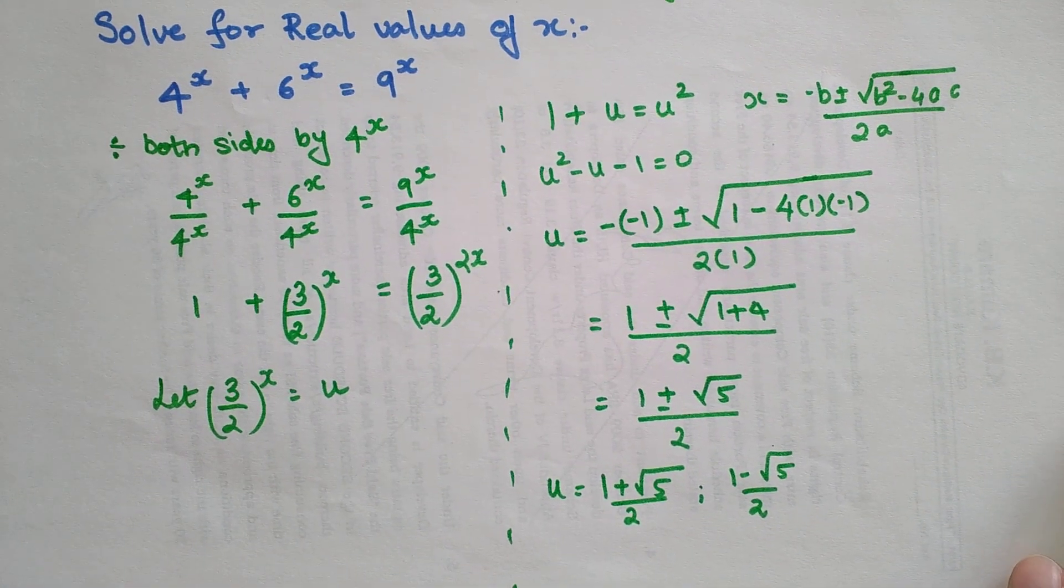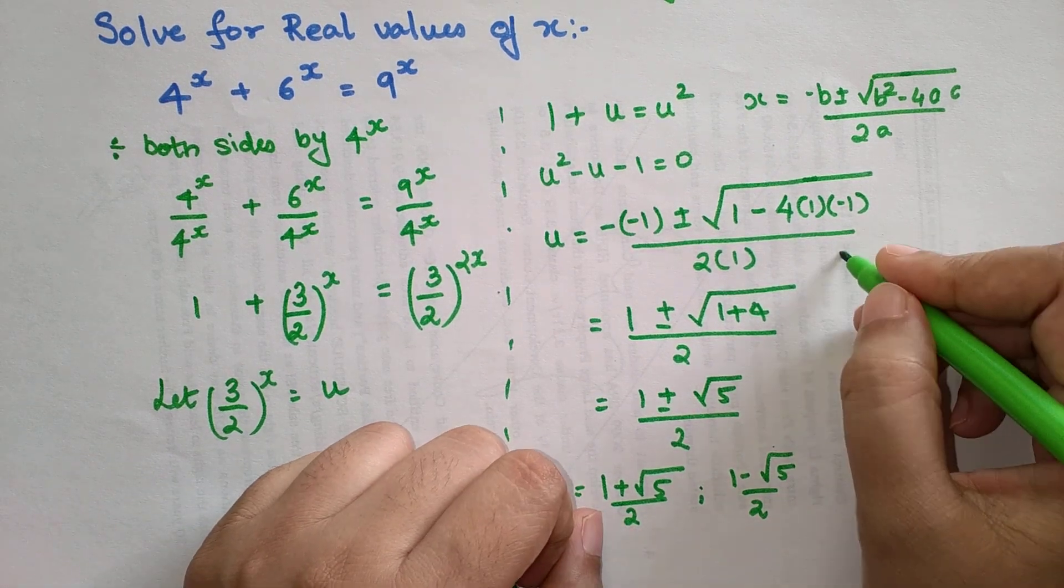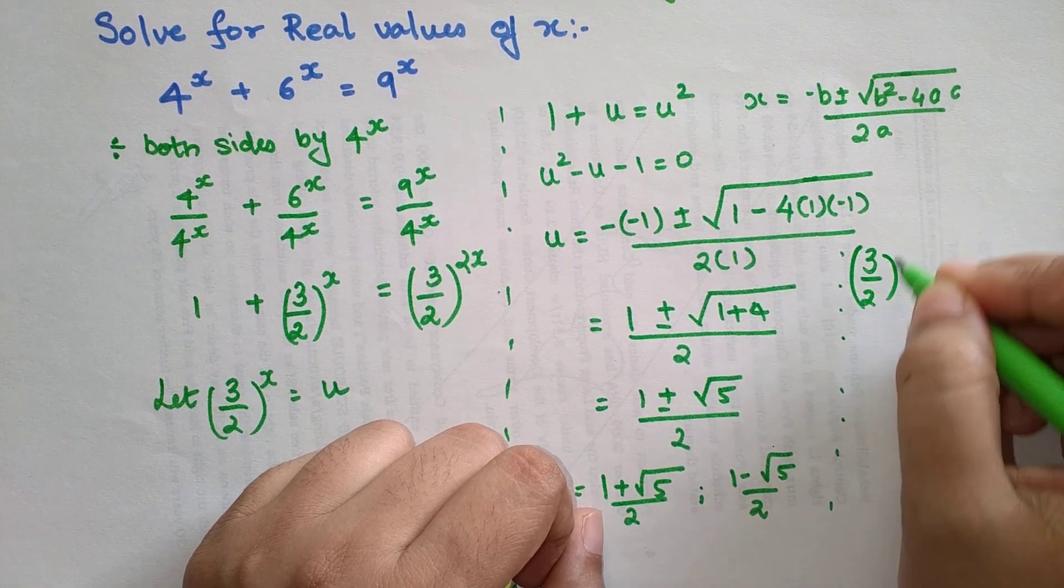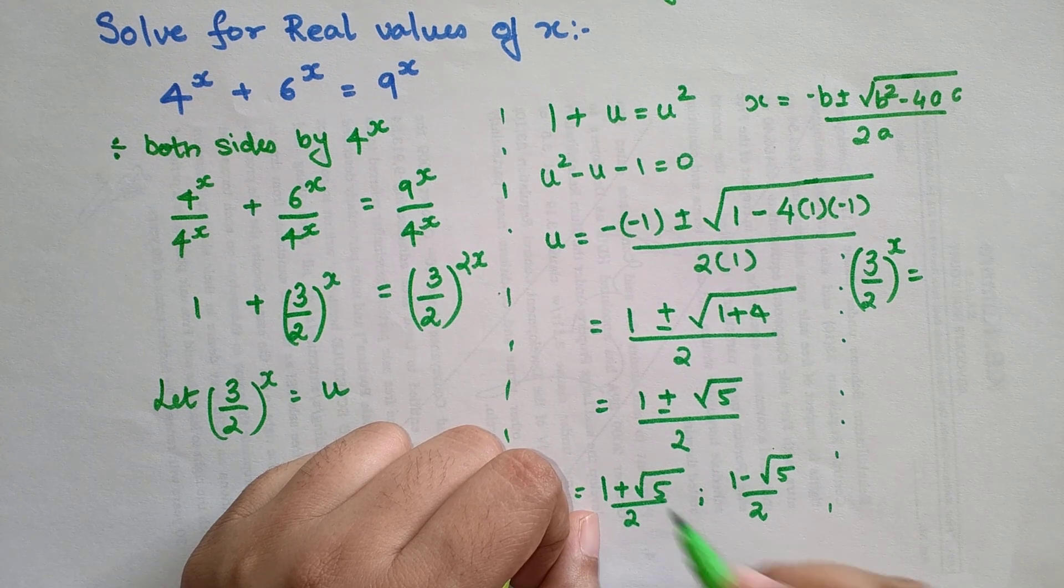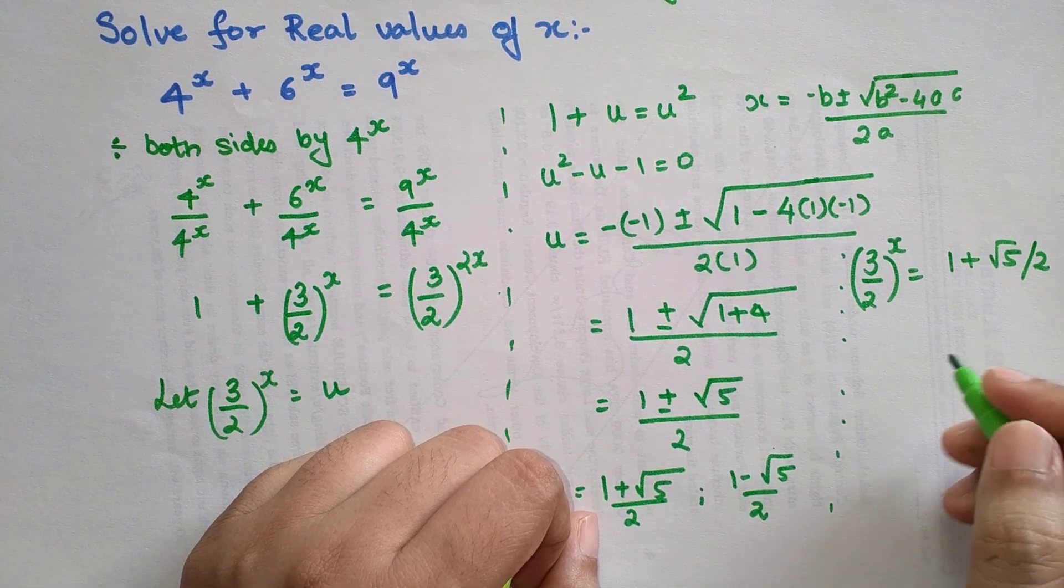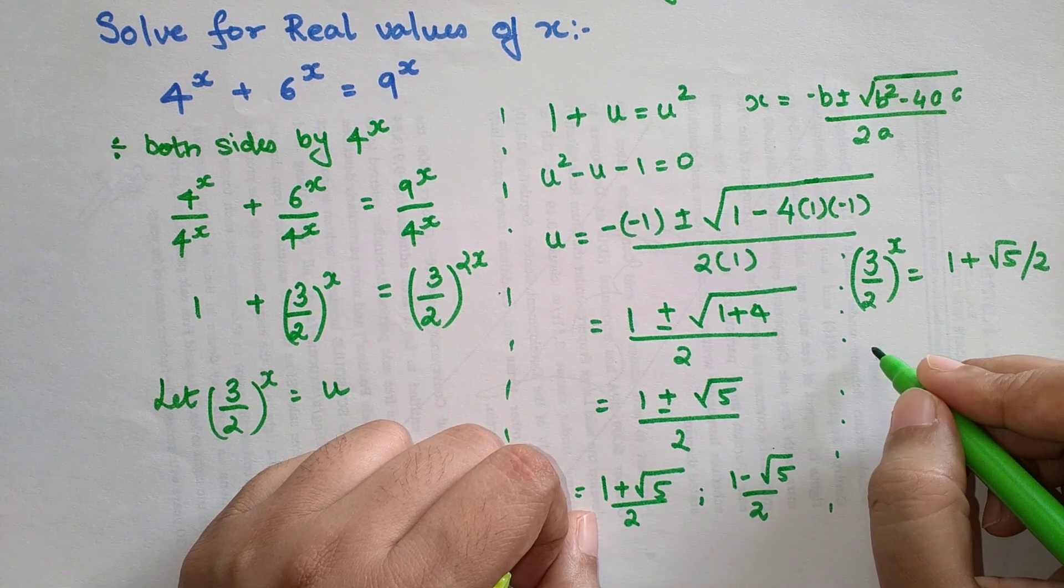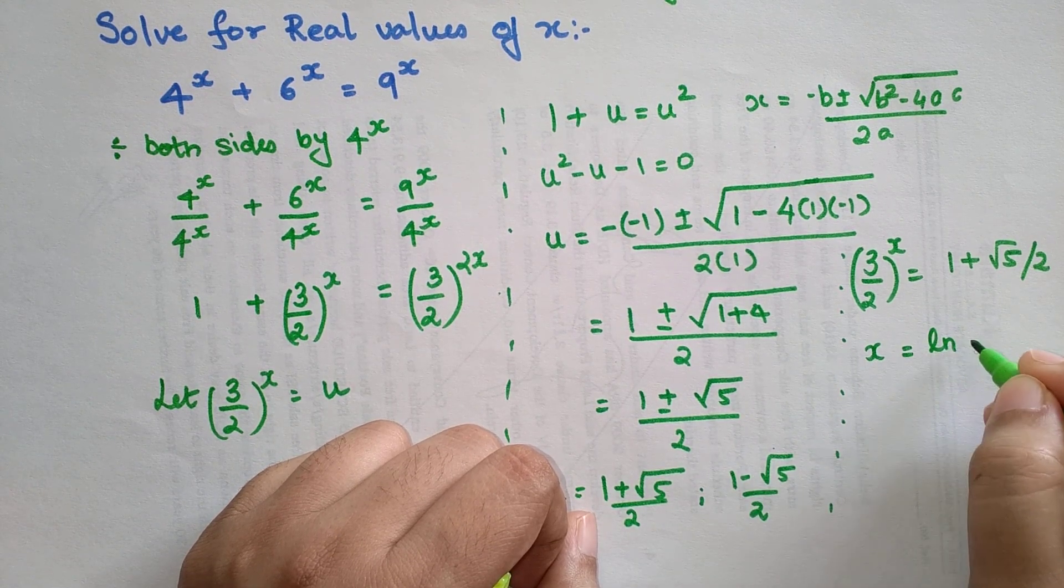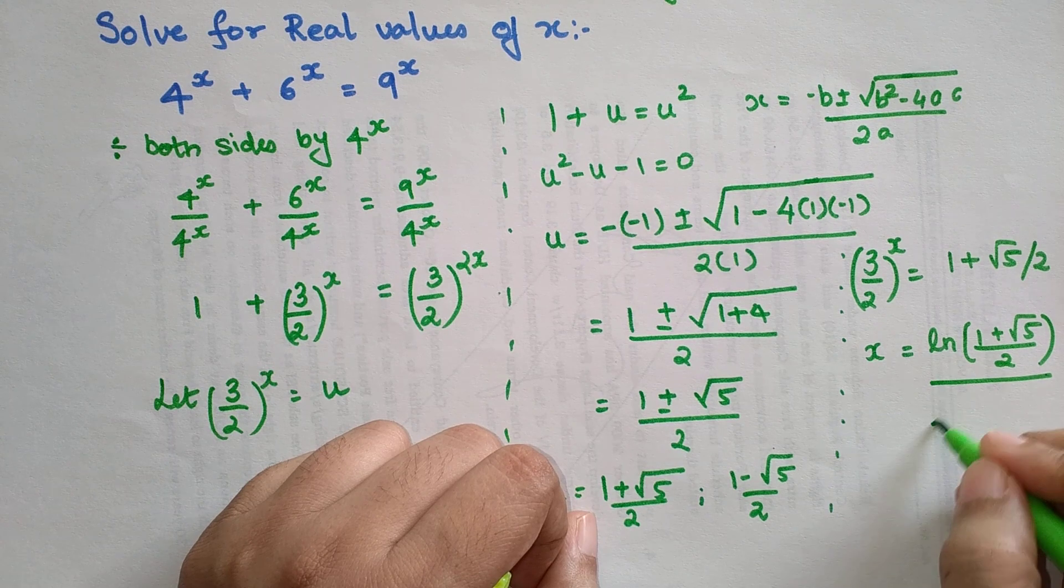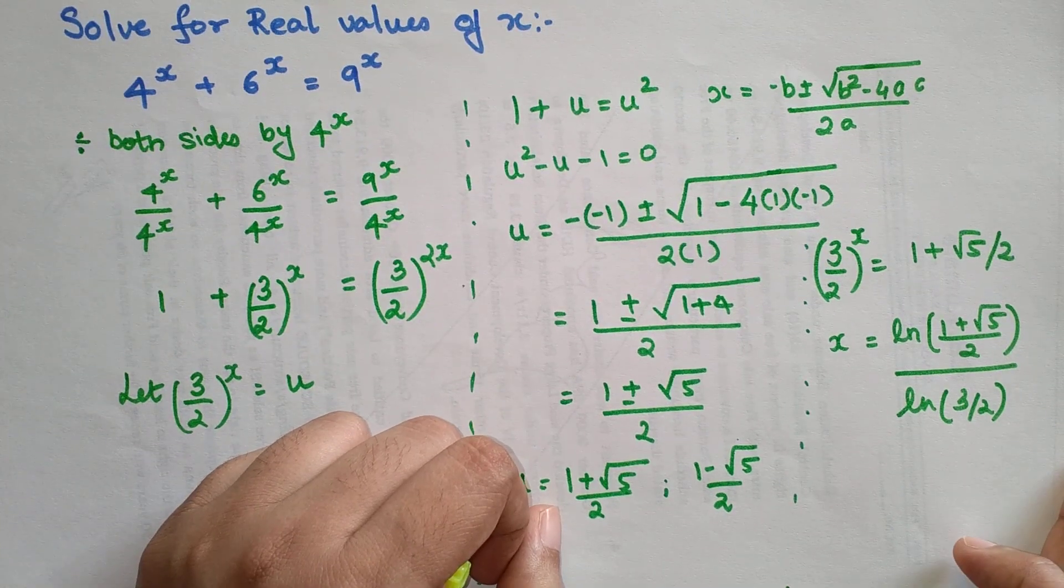But if you look over here, u is nothing but (3/2)^x. Let's substitute that. So I can say (3/2)^x, let's first take this value, so I can write this as (1 + √5)/2. Now if I want to find the value of x, let's take natural log on either side. So I will say that x equals ln of (1 + √5)/2 upon ln of 3/2. So this is my one value.